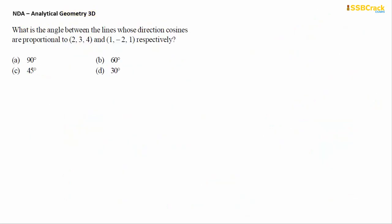Next question: What is the angle between the lines whose direction cosines are proportional to 2, 3, 4 and 1, -2, 1 respectively? Though proportionality is mentioned, when we do the dot product and equate to zero, the common multiple cancels out.